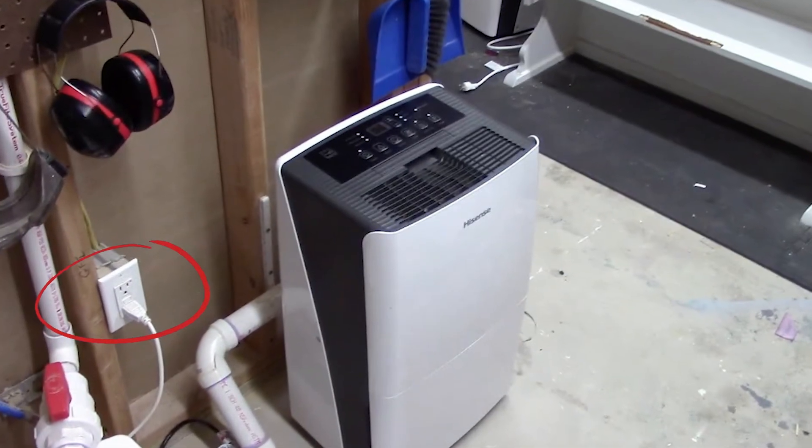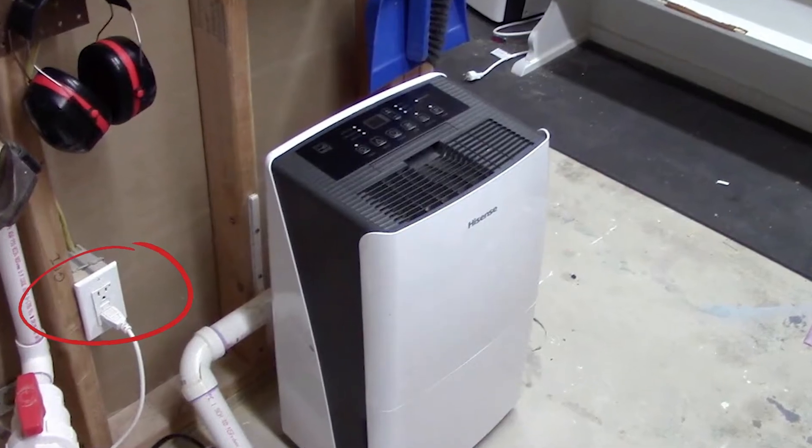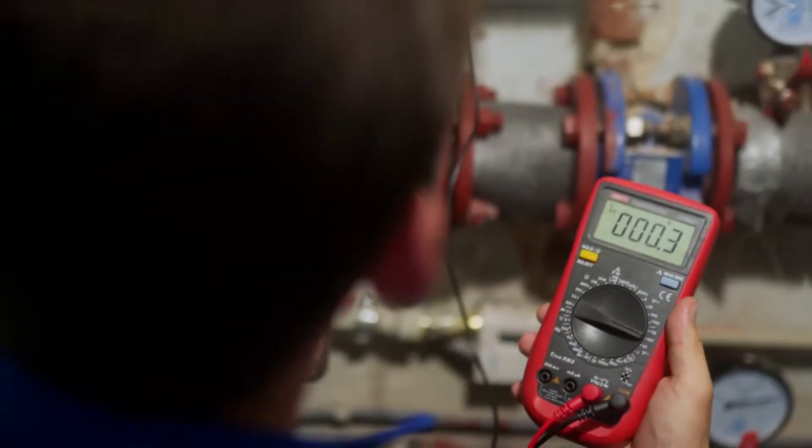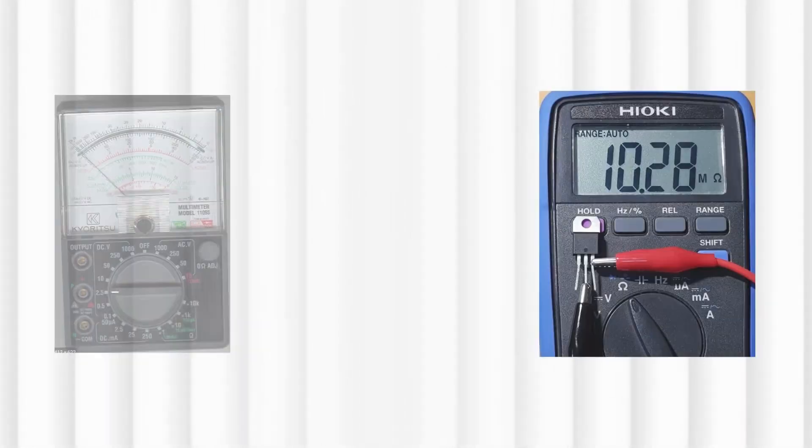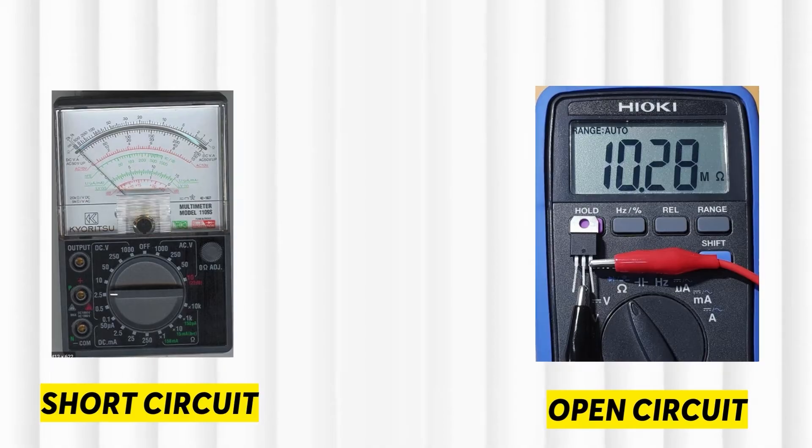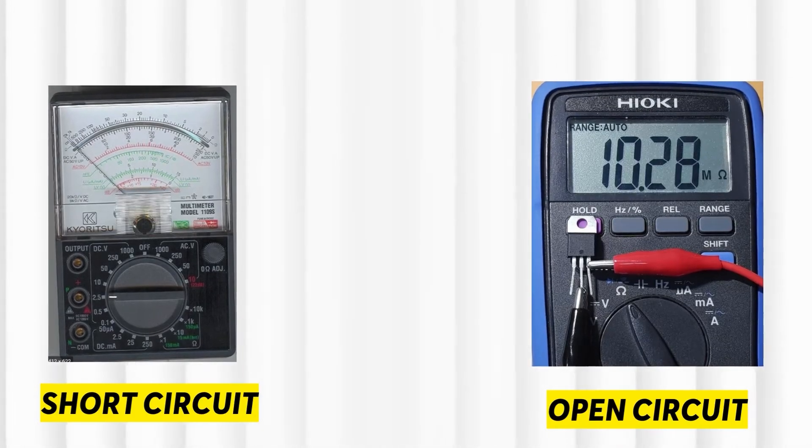Go to the User Interface and disconnect the wires at the ODT terminals. Use a multimeter to measure the resistance in kilohms. A short circuit will show a low resistance, while an open circuit will show high resistance.